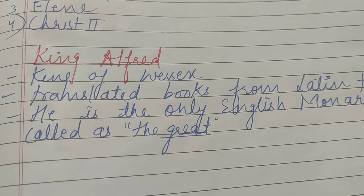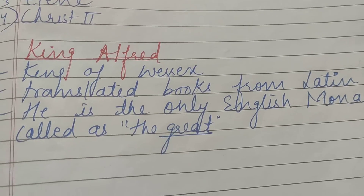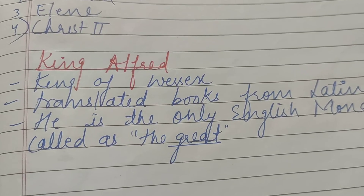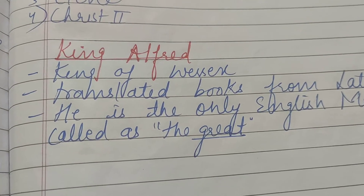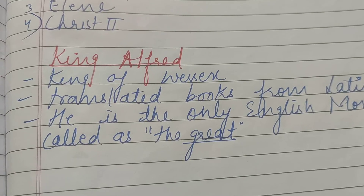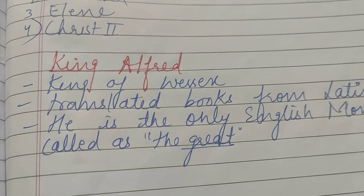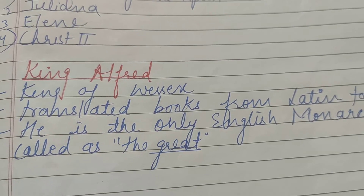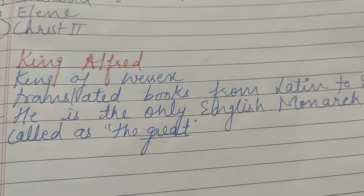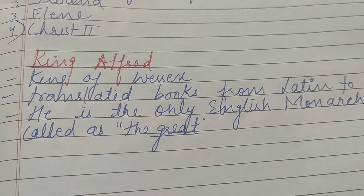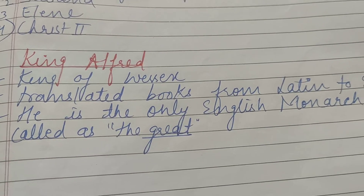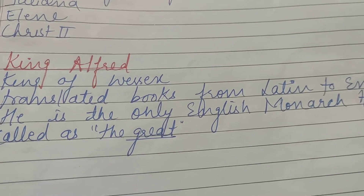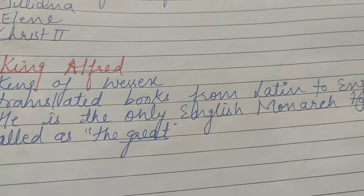Next is King Alfred. King Alfred — maine aapko pehle bataya hai — he was the King of Wessex, aur unhone sabhi kingdoms ko ikatha kiya tha aur Vikings ko bhaagane mein poora apna yogdan diya tha. King Alfred ne bhi kaafi saari books ko Latin se English mein translate kiya. And he is the only English monarch who is called 'the Great' — King Alfred the Great.